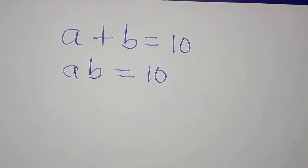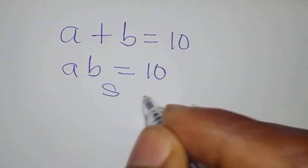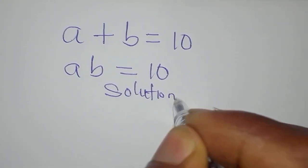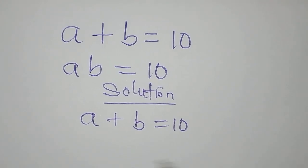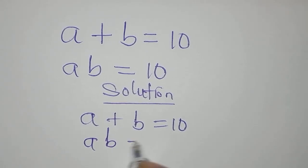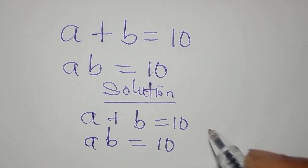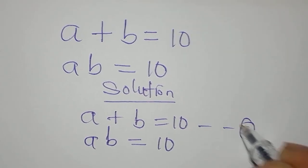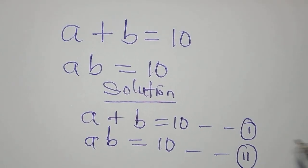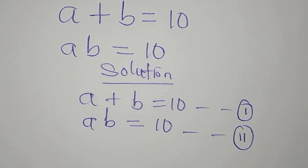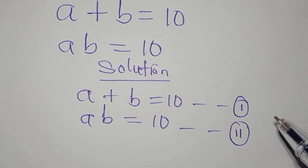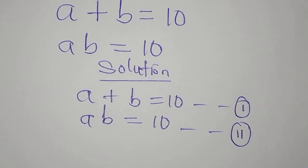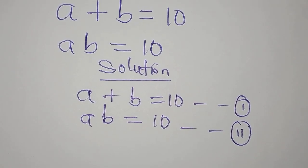Hi everyone. Let's provide the solution to this problem. We have a + b = 10 as equation 1, and a·b = 10 as equation 2. We're going to solve this problem simultaneously, because in both equations we have two unknowns.